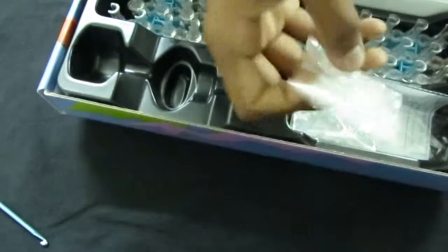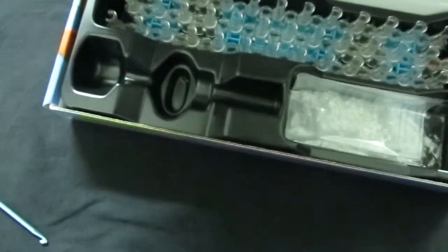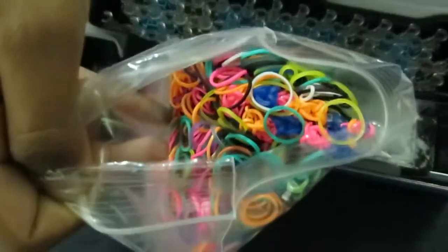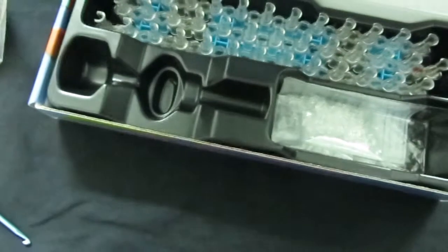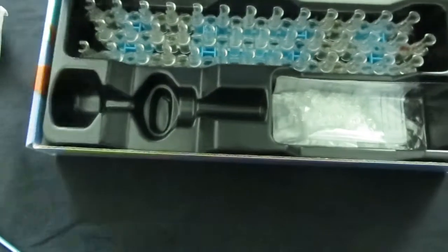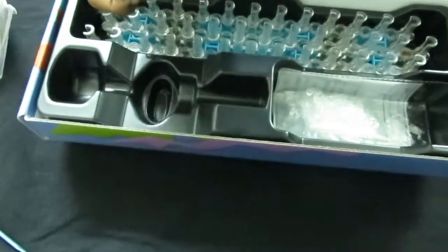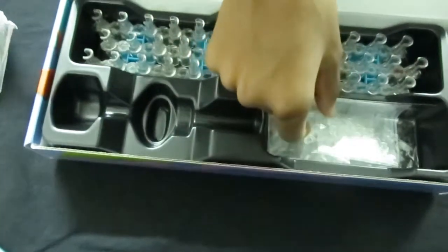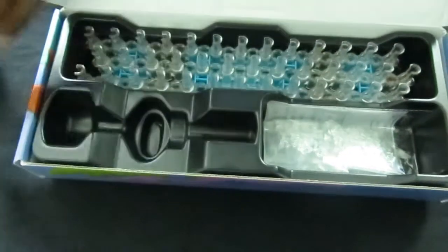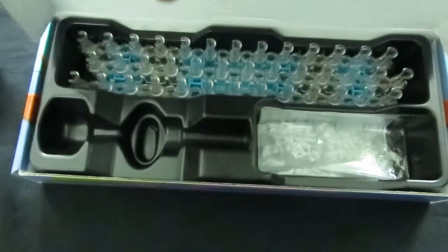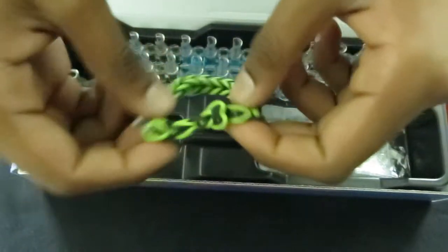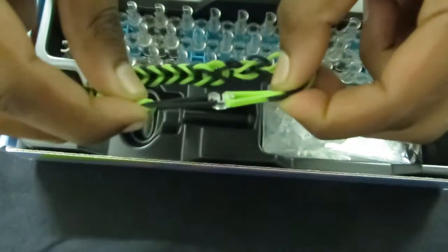The third part to Rainbow Looms are c-clips and rubber bands. So as I said earlier in this video, rubber bands are used to be placed on this loom and then looped. And then afterwards you will use the c-clips to attach two rubber bands together like this. You see here how these two rubber bands are attached together by a c-clip? That's how.